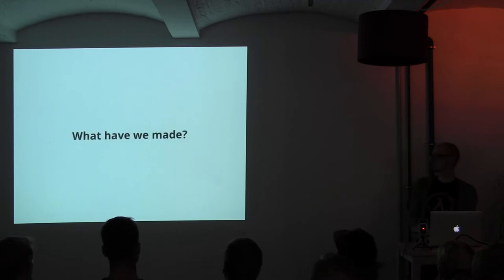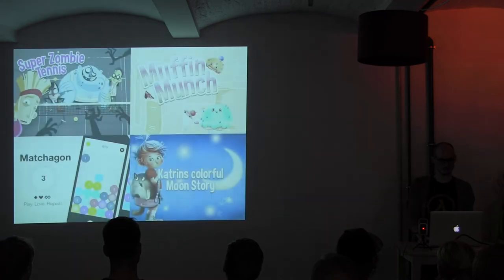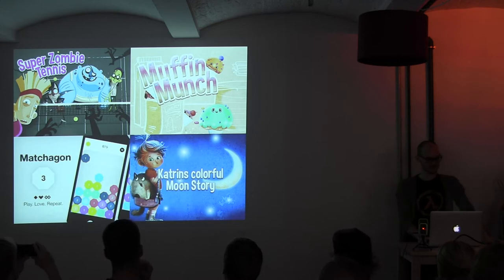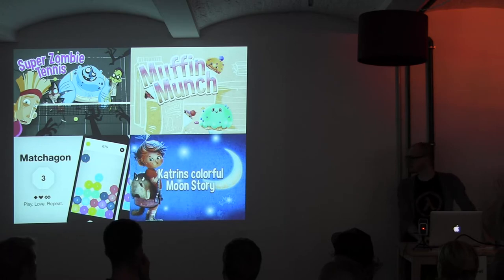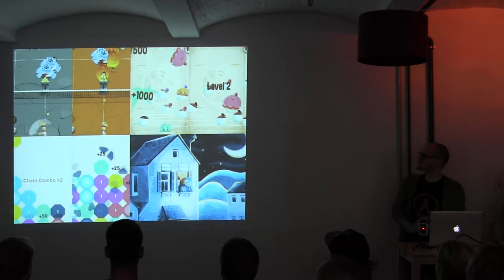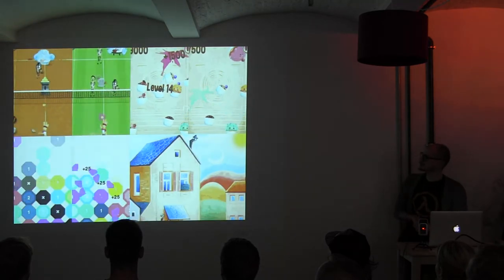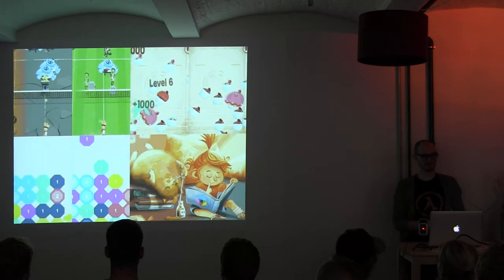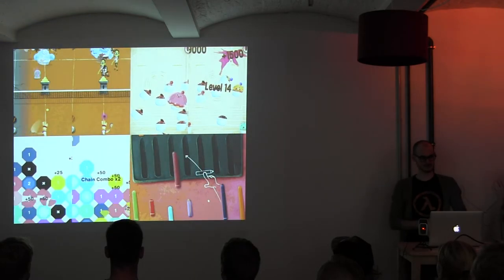We started around August 2012, and right now we have four released projects. On the top left is Super Zombie Tennis, released August 2012. It's a shooter-based game where you avoid incoming waves of zombies, featuring tower defense with different defense states and a basic leveling system for boosts like ice balls and fireballs.